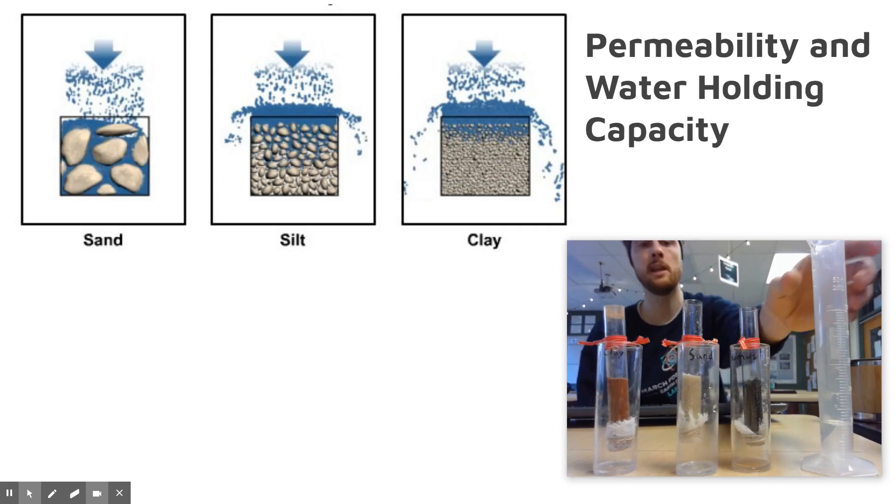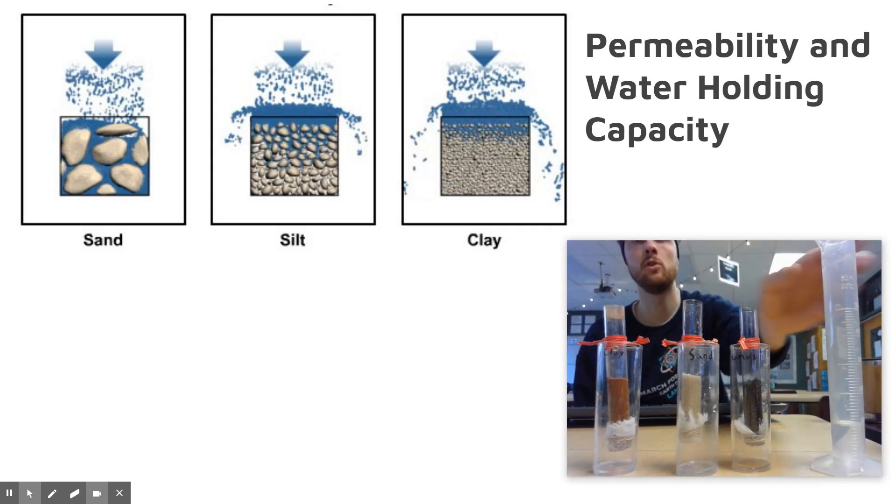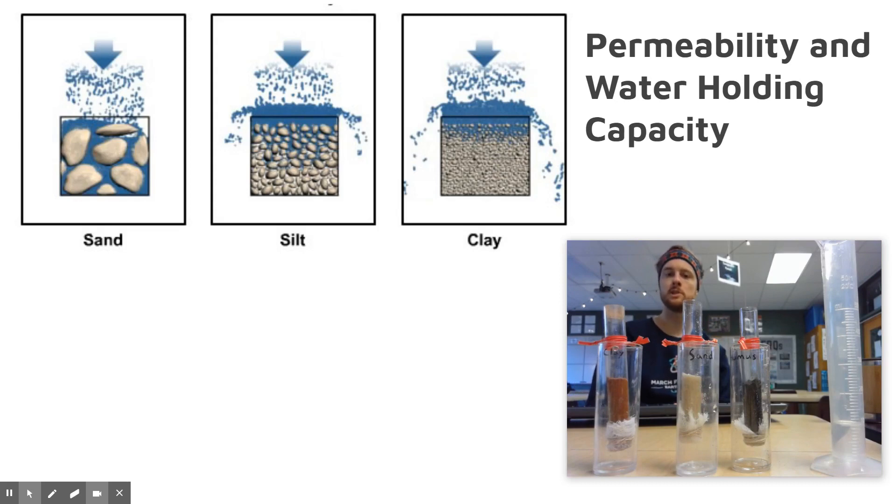We can do a really simple test for permeability. Put different soil types into these little plastic columns. You have a cheese cloth or some sort of permeable membrane at the bottom. Then you get 10 milliliters of water and pour that water through each of your samples. It's really important that you time this. You can measure the amount of time it takes for that first drop of water to make it through the column, or the amount of time it takes for all the water to make it through. The faster water is moving through, the higher the permeability.